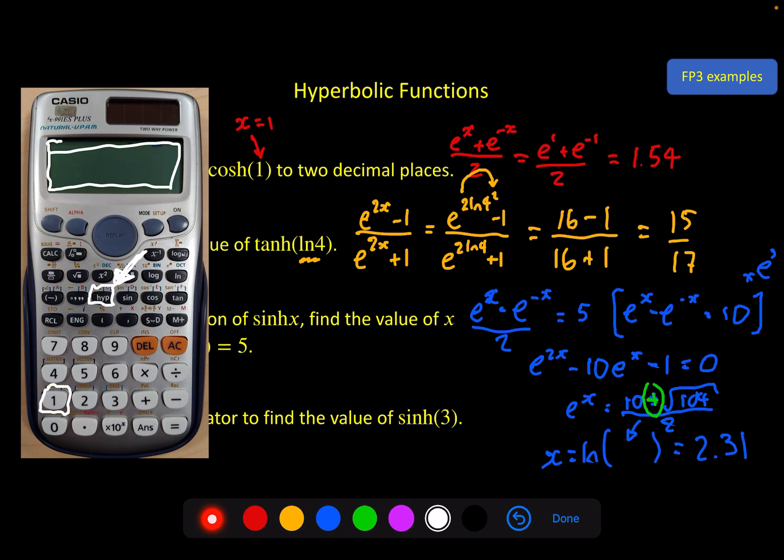So in this case we want sinh so I will press hype and then 1 to get the sinh function. Then I would press 3 because that's what I want and then I would press equals. And if you do that you should get the value 10.02 to two decimal places.